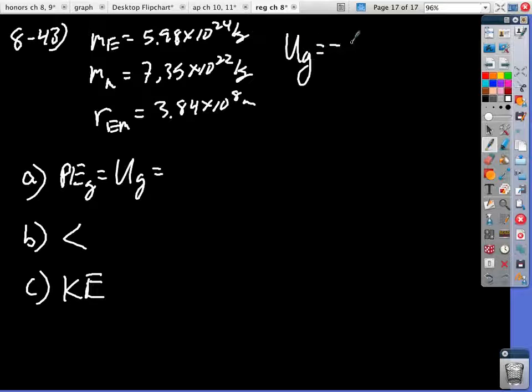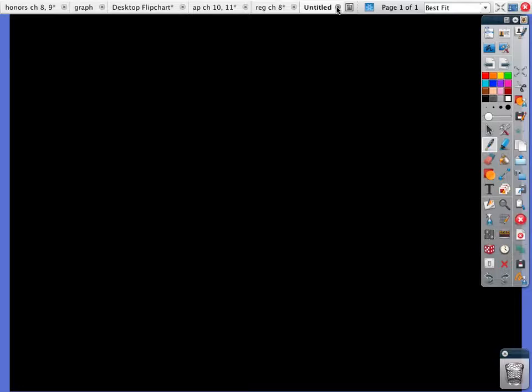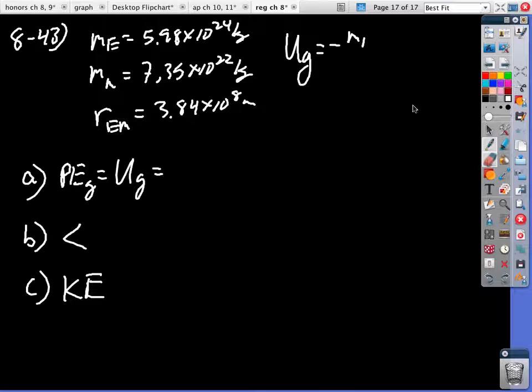UG is equal to negative GM1M2 over R. Okay, it's not over R squared. Potential energy is over R. In case you're wondering why,